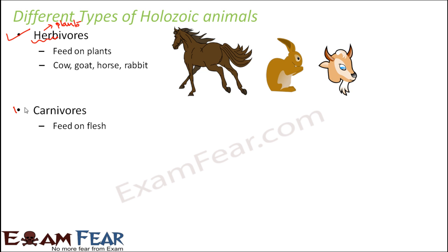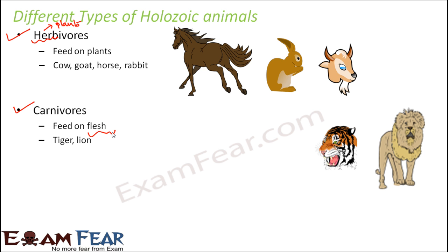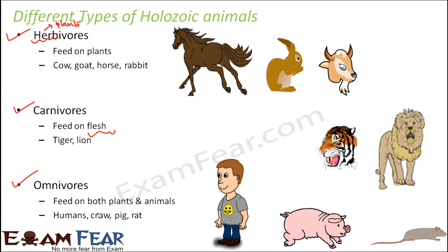The next type is carnivores — animals which feed only on flesh and will not eat plant parts. Examples include lion and tiger. On the other hand, animals which can feed on both plants and animals are called omnivores. The best examples are human beings, pigs, and rats, whose bodies are designed to digest both plants and animals.